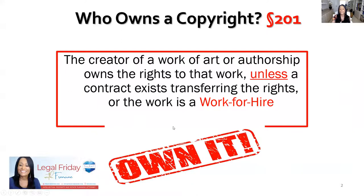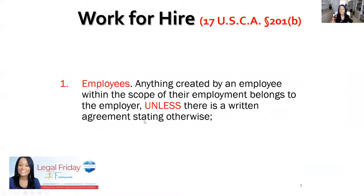So how does work for hire show up? Well, it generally shows up in one of two ways. The first is if you are employed by someone. If you are employed by someone and within the scope of your employment you create a work of art or authorship, unless there's a contract in place, you don't own the rights — period. The person who owns the rights is the entity that hired you as an employee. This is not a contractor; this is as an employee.